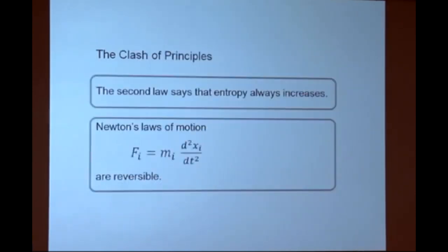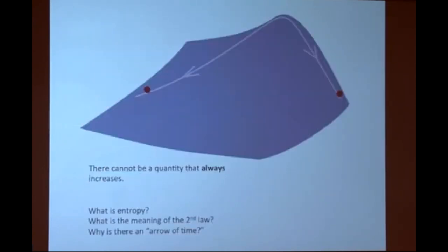The clash of principles. The conflict of principles. The second law says that entropy always increases. Newton's laws of motion, and for practical purposes today I don't want to introduce quantum mechanics, but quantum mechanics also says the same thing. It says that the laws of physics, in particular Newton's laws, are reversible. Let's remind ourselves what that means.